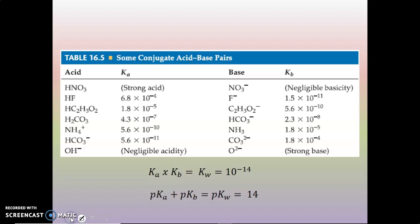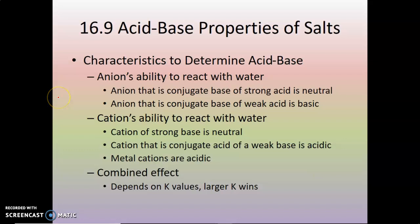Here we have some acid-base conjugate pairs. If you multiply Ka times Kb, you get 10 to the minus 14. And if you take the negative log of both and add them, pKa plus pKb equals pKw, because of the rules of logarithms. Acids and bases also extend to salts creating acidic or basic conditions — more detail on that in part three.